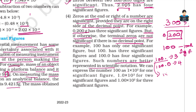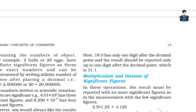In scientific notation: 1 × 10² represents two significant figures, and 1.00 × 10² represents three significant figures.